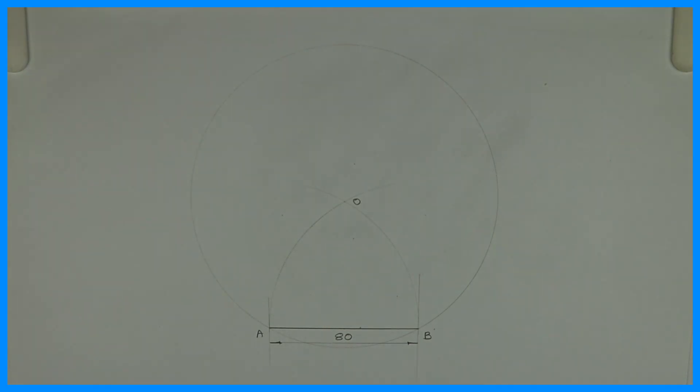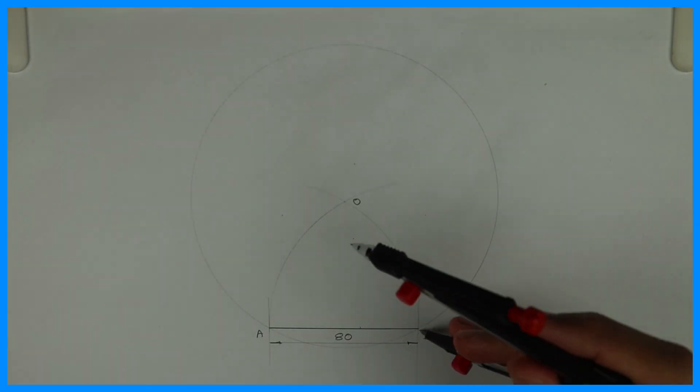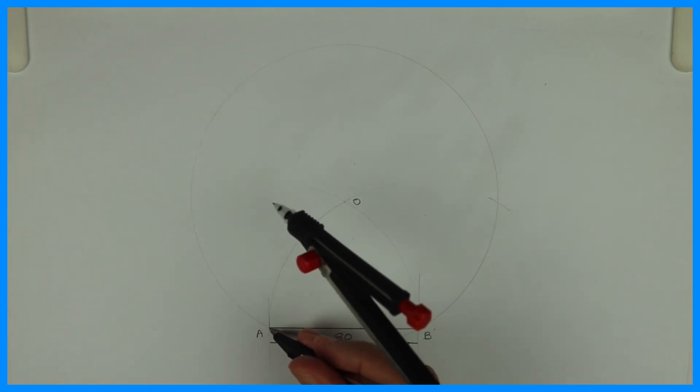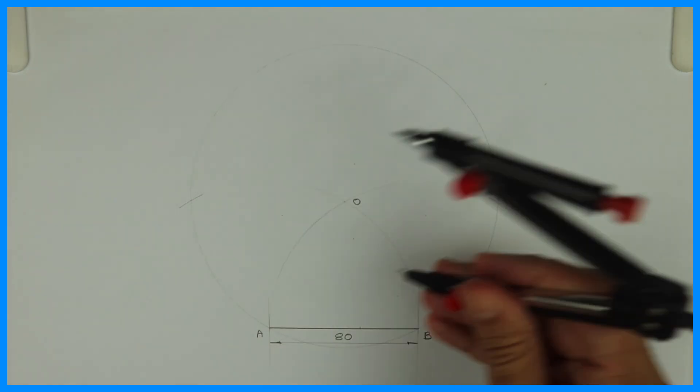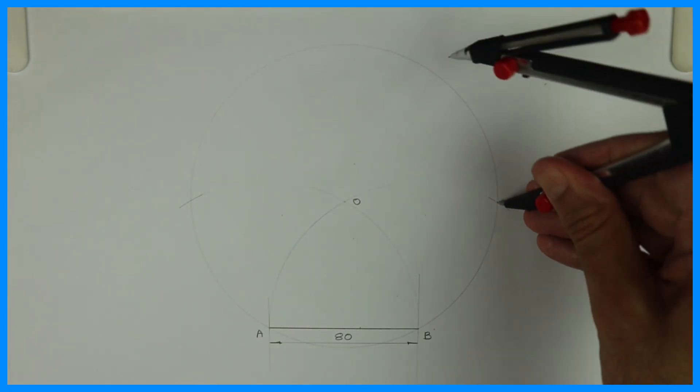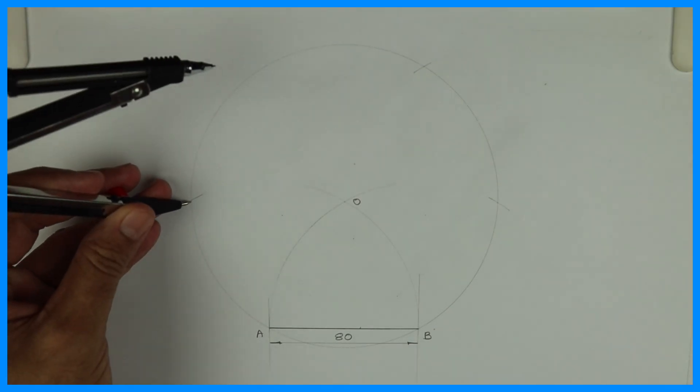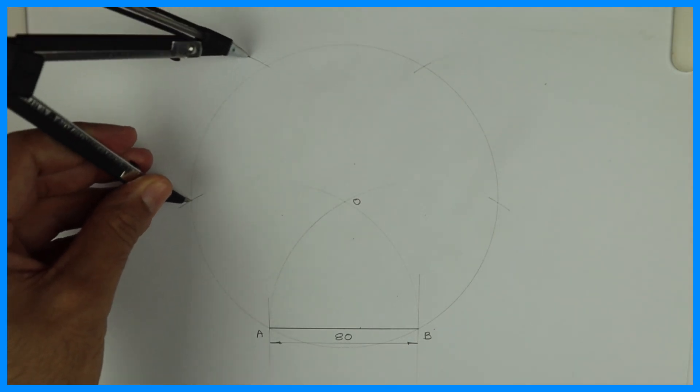After that you take A to B. Take A to B in your compass and from B you cut on left side, from A you cut on right side. Sorry, from B you cut on right side, A you cut on left side. Then again you cut on left and right as shown in the figure.